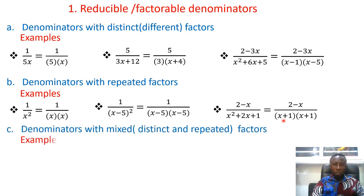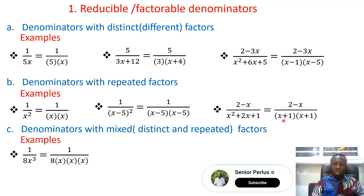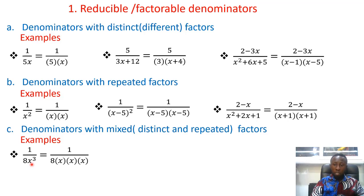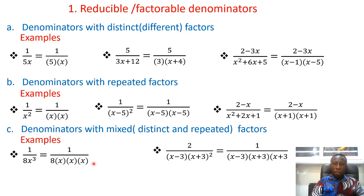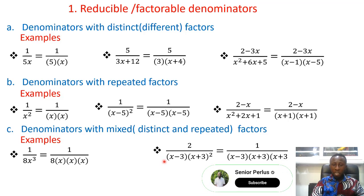Next we have denominators with mixed distinct and repeated factors. For example, 1 over 8s³: you have one distinct factor (s) and s is repeated three times, making it a mixed factor. Another example: 2 over (s − 3)(s + 3)². Here we have one distinct factor (s − 3) and one repeated factor (s + 3) squared.